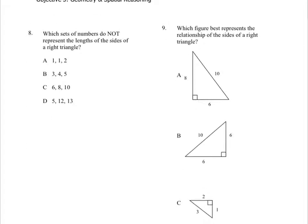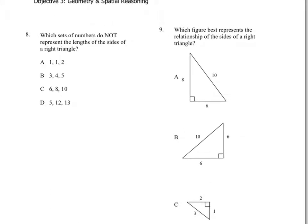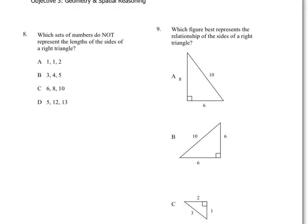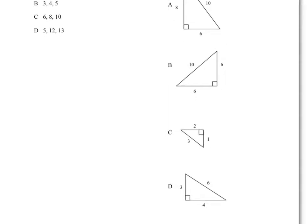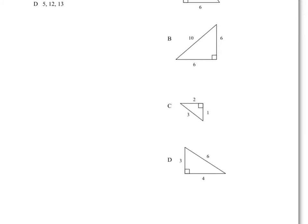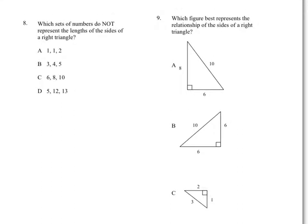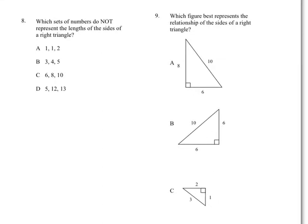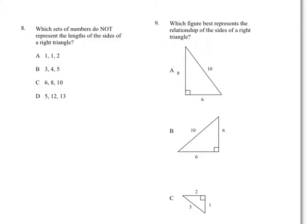Okay, let's take a look at number nine. Which figure best represents the relationship of the sides of a right triangle? Again, another Pythagorean relationship with that Pythagorean theorem. It's really something that's going to be coming up on your test, something you should have learned in seventh grade. So make sure you're familiar with it. Here it has A has 8, 6, and 10; B has 6, 6, and 10; C has 1, 2, and 3; and D has 3, 6, and 4. And again, you're looking for which figure best represents the relationship. Unlike number eight, you're looking for the one that is not a right triangle. Here you're looking for the one that is a right triangle. Go ahead and pause it, write the questions.